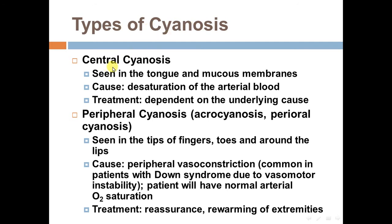Types of cyanosis. Central cyanosis is seen in the tongue and mucous membranes and causes desaturation of arterial blood; treatment depends on the underlying cause. Peripheral cyanosis, or acrocyanosis, and perioral cyanosis are seen in the tips of fingers, toes, and around the lips. The cause is peripheral vasoconstriction, common in patients with Down syndrome due to vasomotor instability. Patients will have normal arterial oxygen saturation. Treatment is reassurance and rewarming of the extremities.